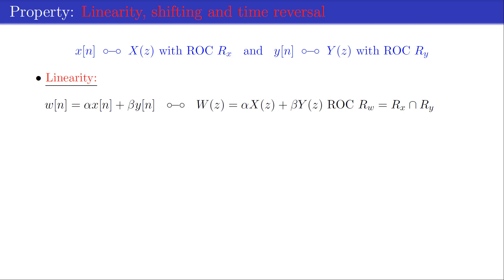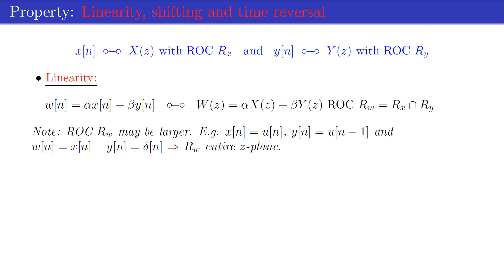As with the DTFT, the z-transform is a linear operation. The resulting region of convergence R_w of the sequence w[n] will include the intersection of R_x and R_y. However, the region of convergence R_w may be larger.